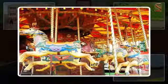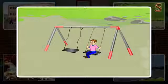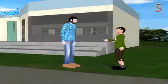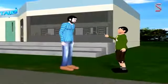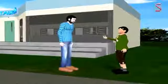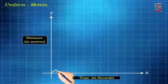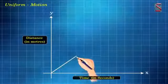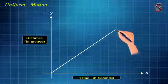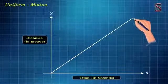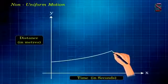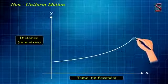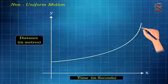Examples of non-uniform motion include a car moving in a crowded street, a person jogging in a park, a racing horse, a merry-go-round, a swing, etc. The distance-time graph for uniform motion is a straight line, while the distance-time graph for non-uniform motion is a curved shaped graph.